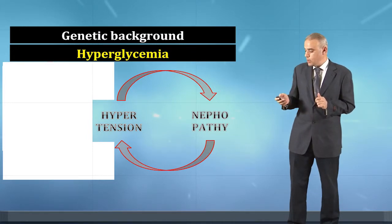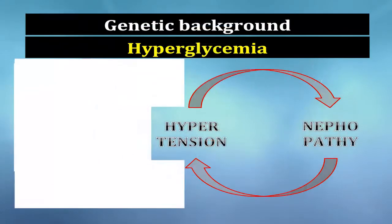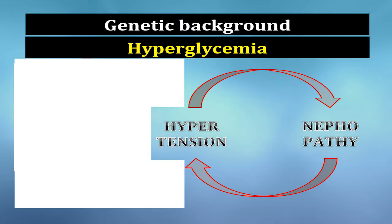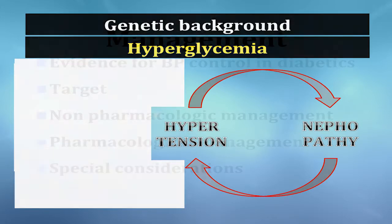Starting with hyperglycemia and genetic background, many metabolic and hemodynamic changes develop leading to hypertension. Because diabetic patients are prone to diabetic nephropathy, a vicious circle develops: diabetes leads to hypertension and nephropathy, nephropathy further increases blood pressure, leaving the patient in a cycle of elevated blood pressure, worsening nephropathy, and very high cardiovascular disease risk.